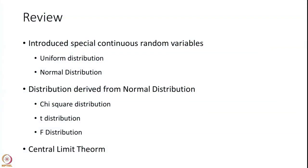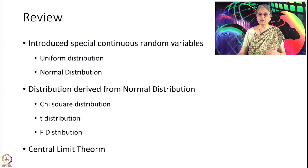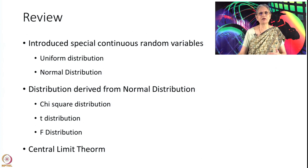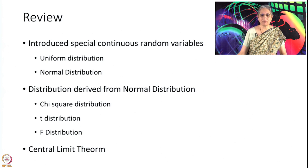Let us quickly review. We first introduced some continuous random variables; before that we introduced some discrete random variables — uniform discrete random variables, then Bernoulli trials and three distributions derived out of Bernoulli trials. We gave a 3D APFIM example there.